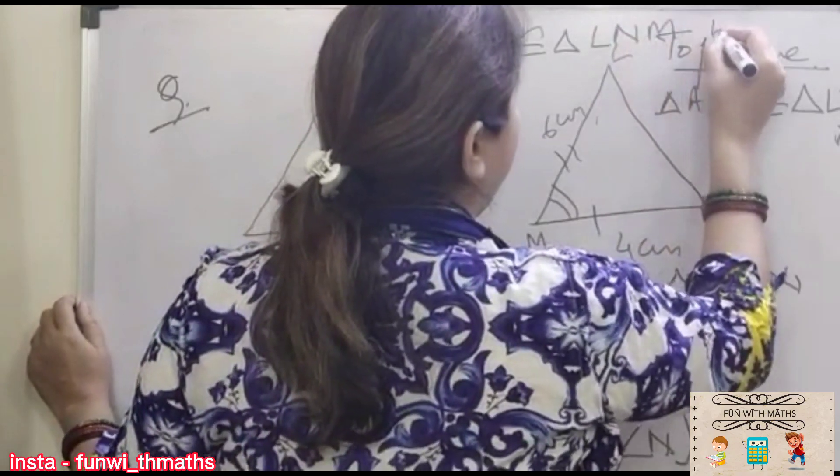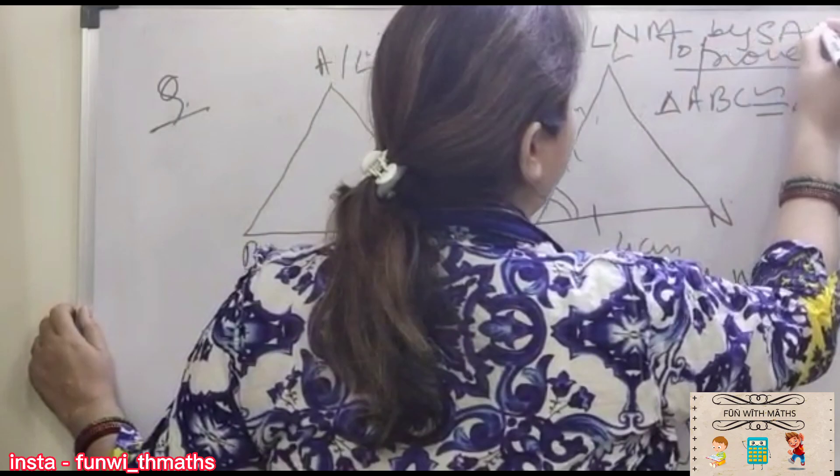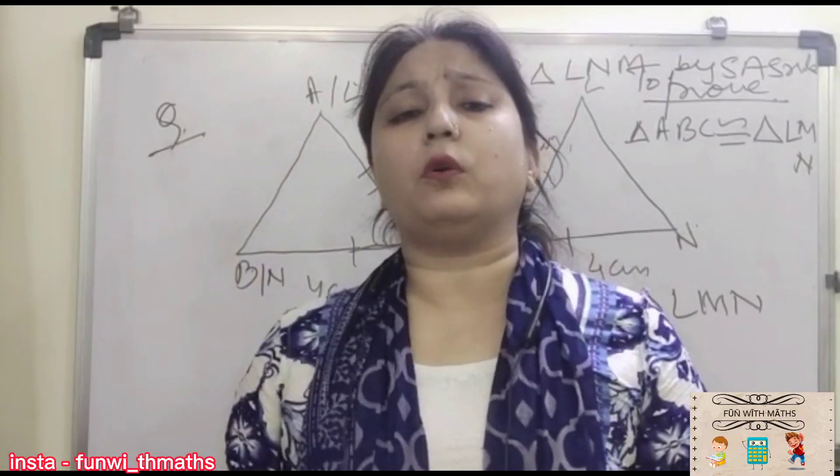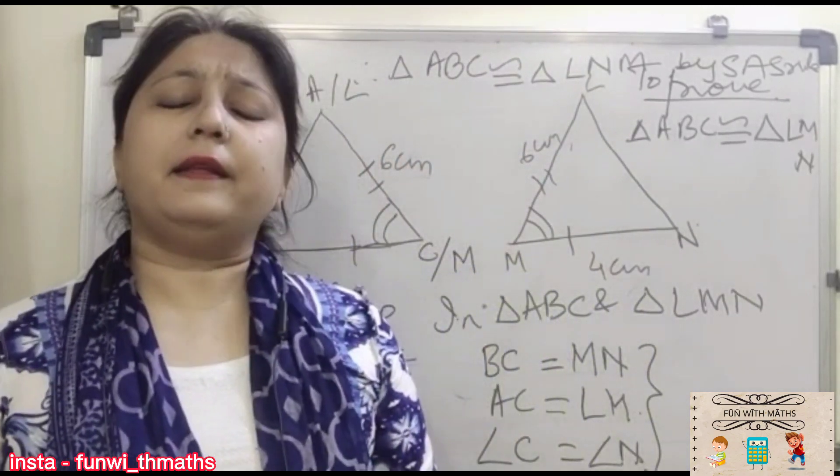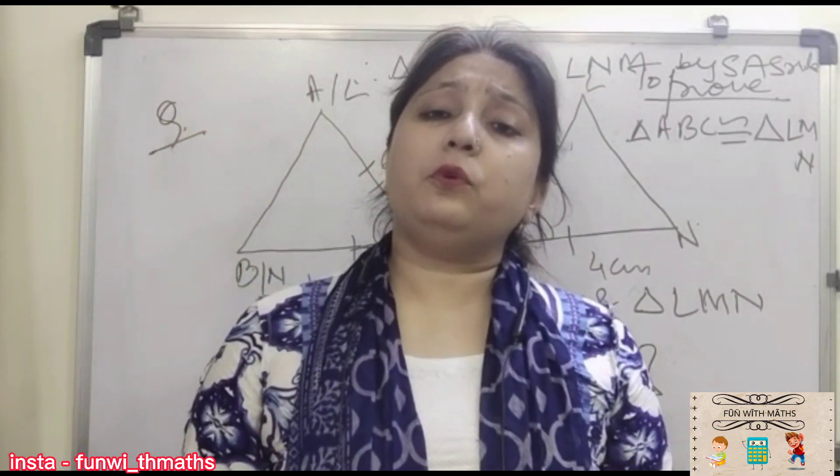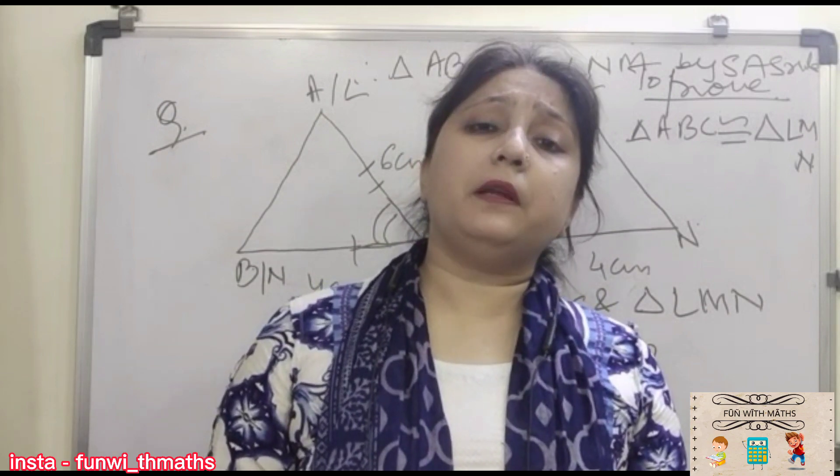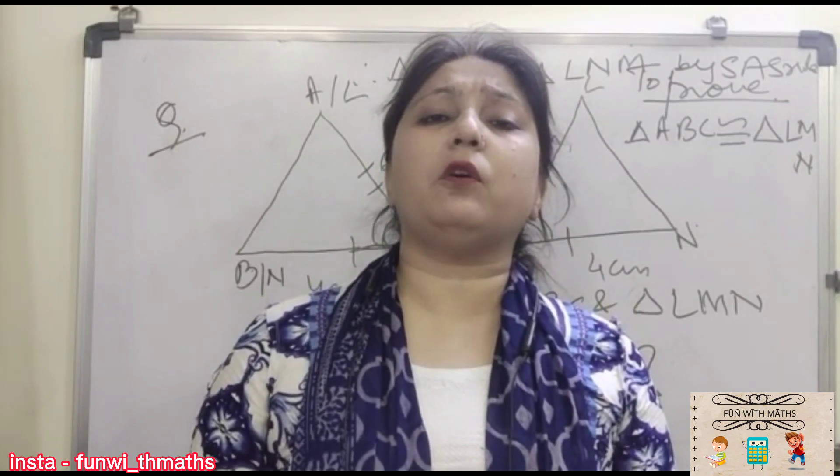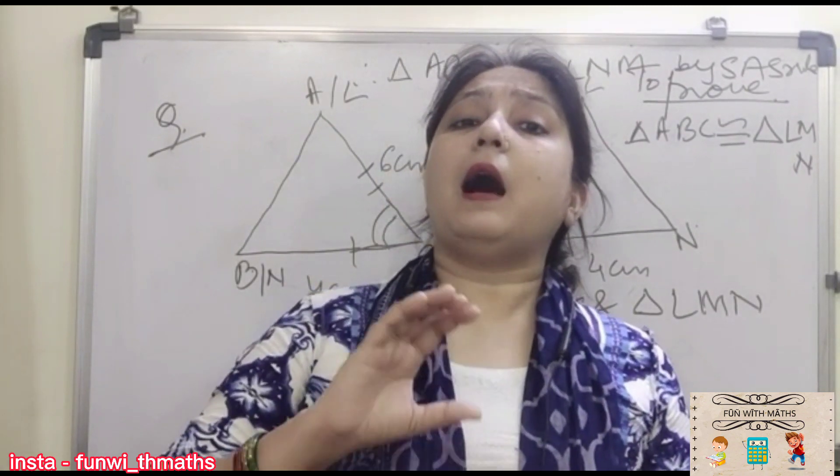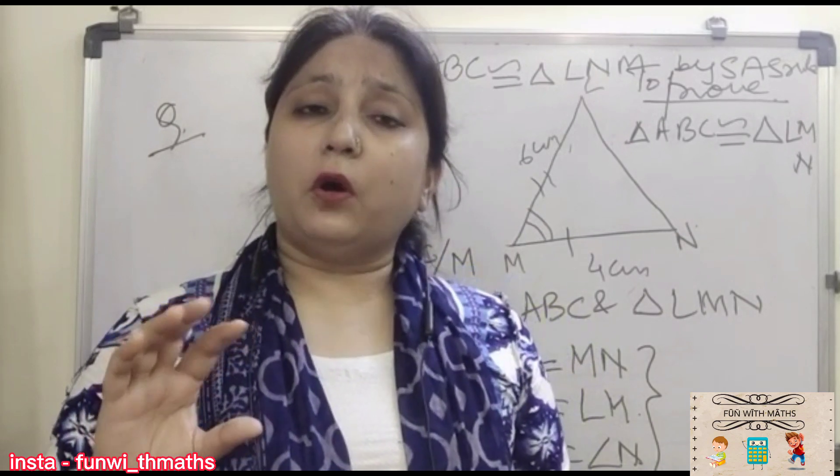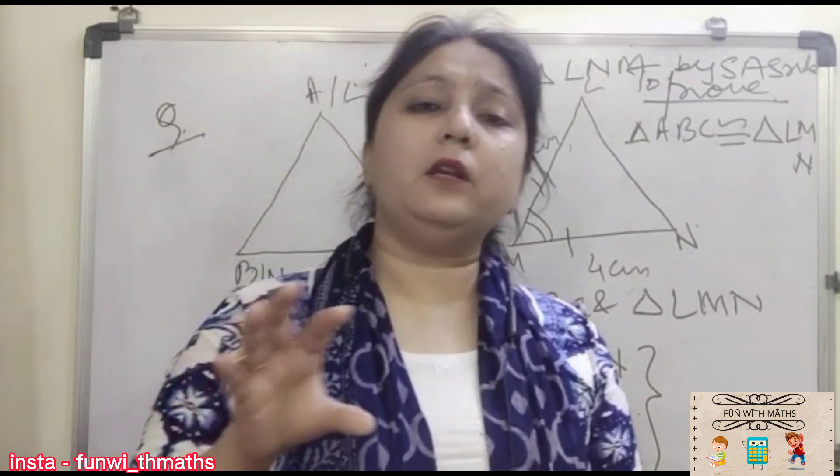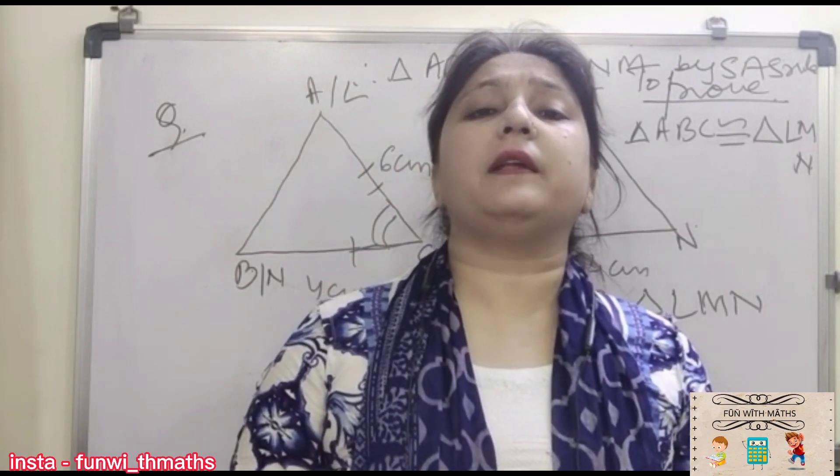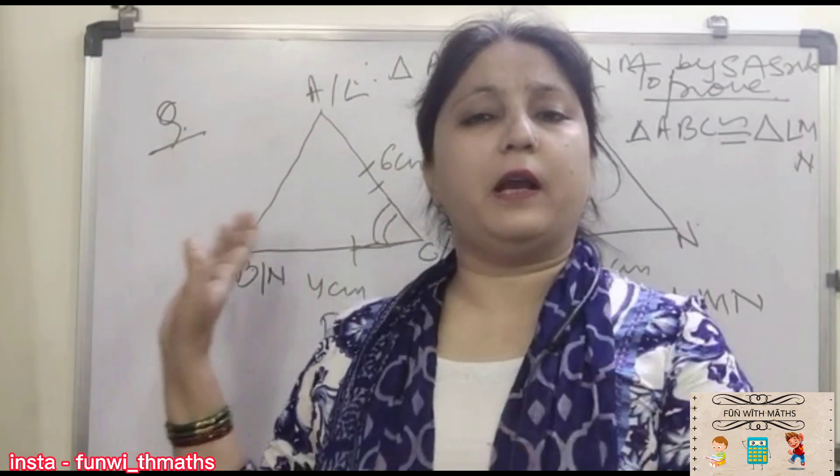Just write down the definition for this SAS congruence. It states that if two sides and their included angle of one triangle are equal to the corresponding two sides and included angle of other triangle, then the two triangles are congruent which we are doing again and again.